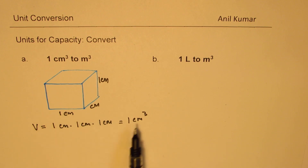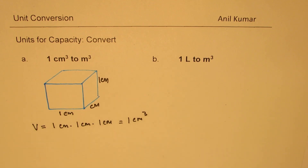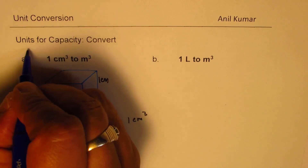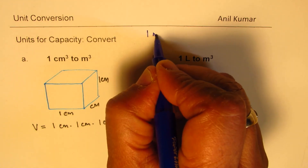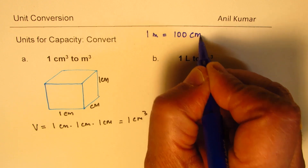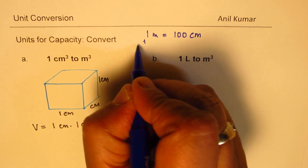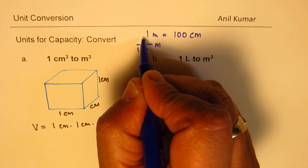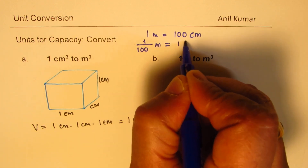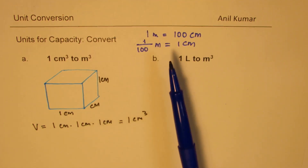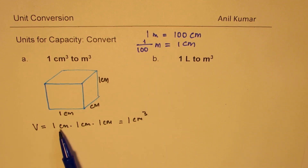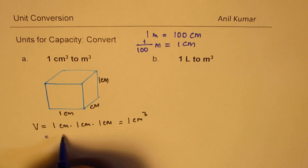Now we need to figure out how much this is equal to in meter cube. We know that one meter is one hundred centimeters, or dividing by one hundred, one centimeter equals one one-hundredth of a meter. So we can write one centimeter as one over one hundred meters.